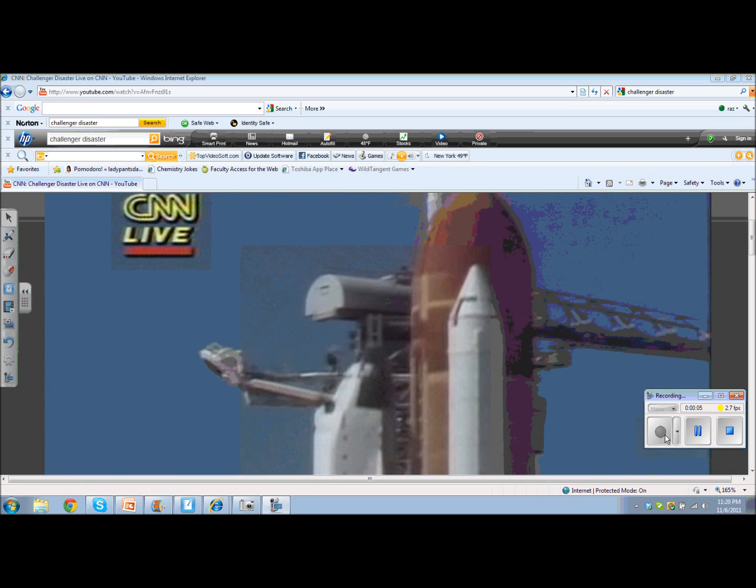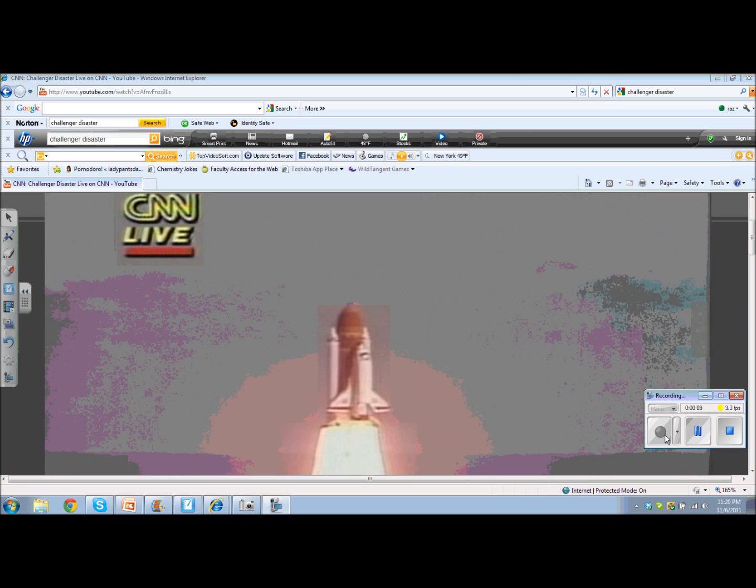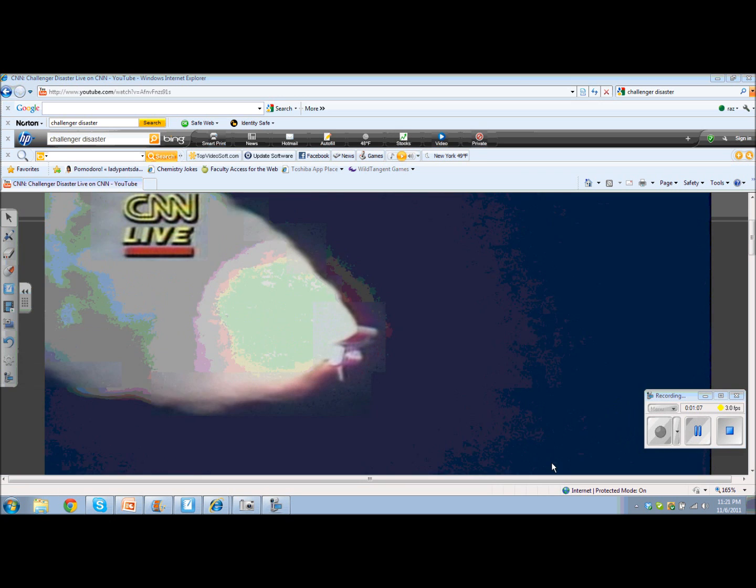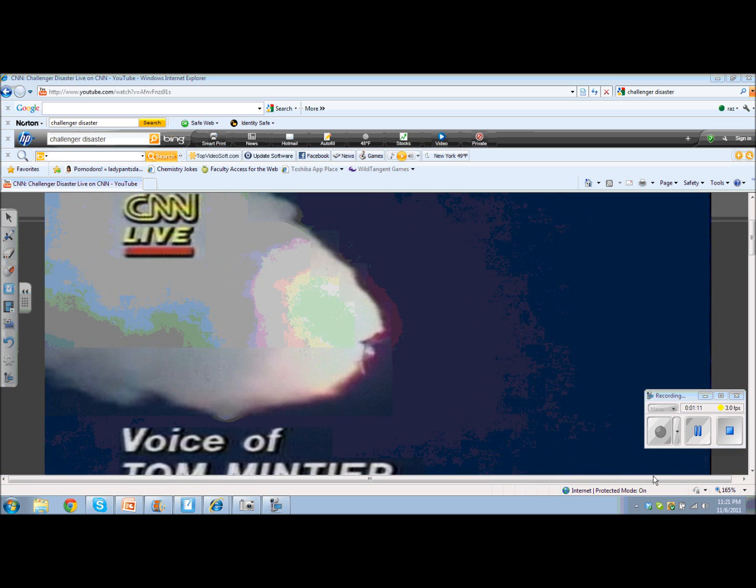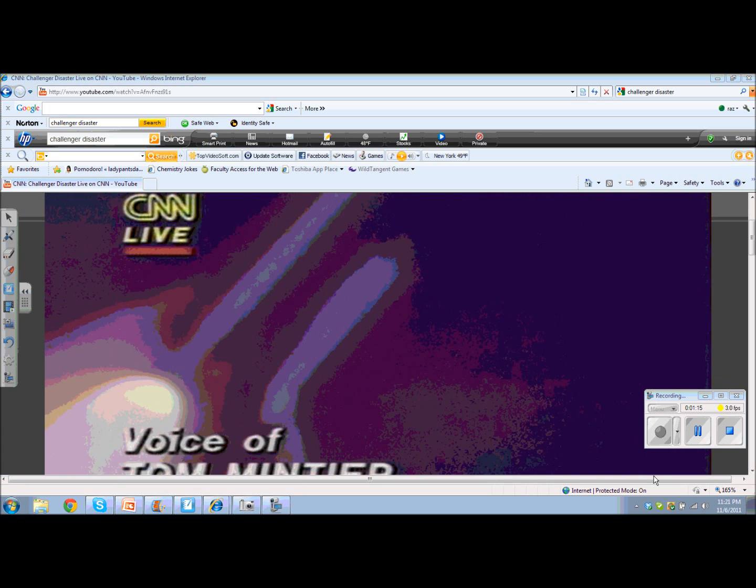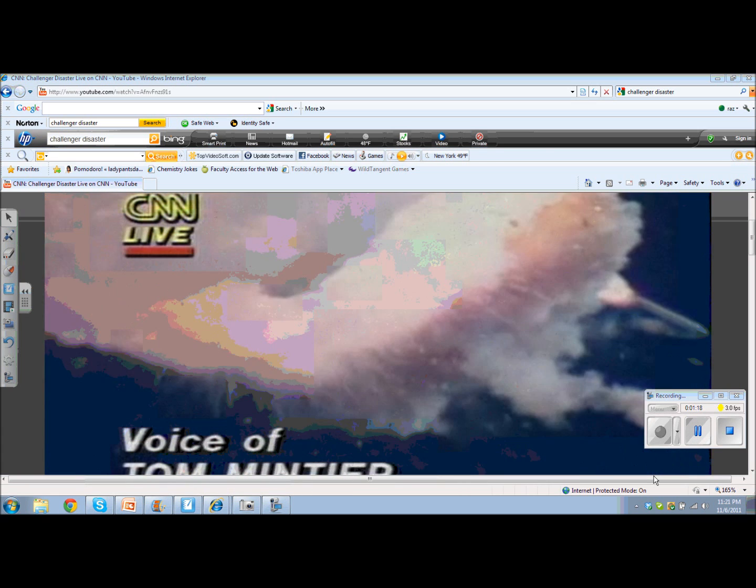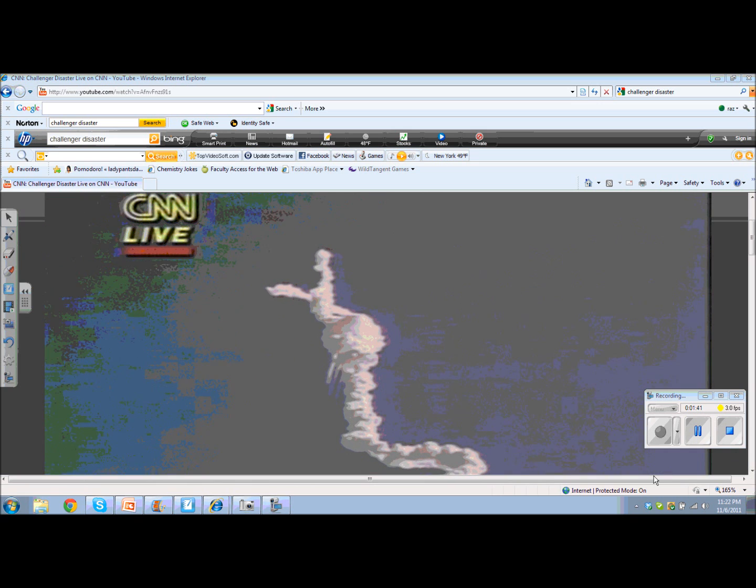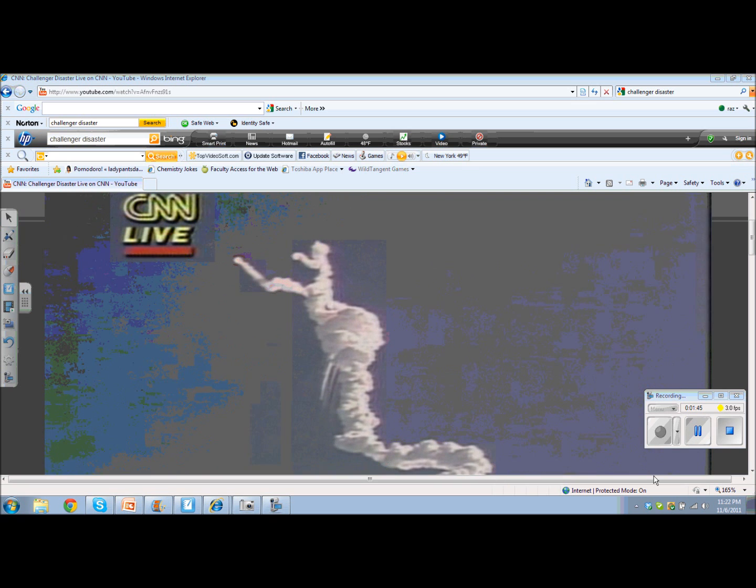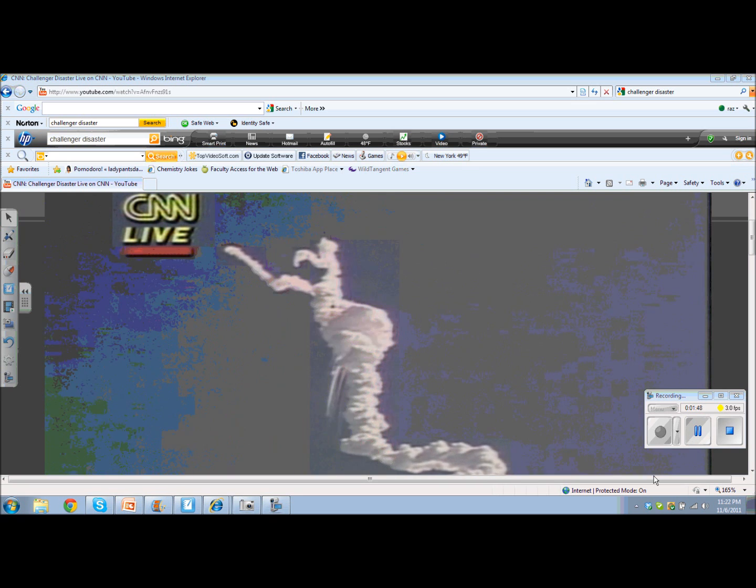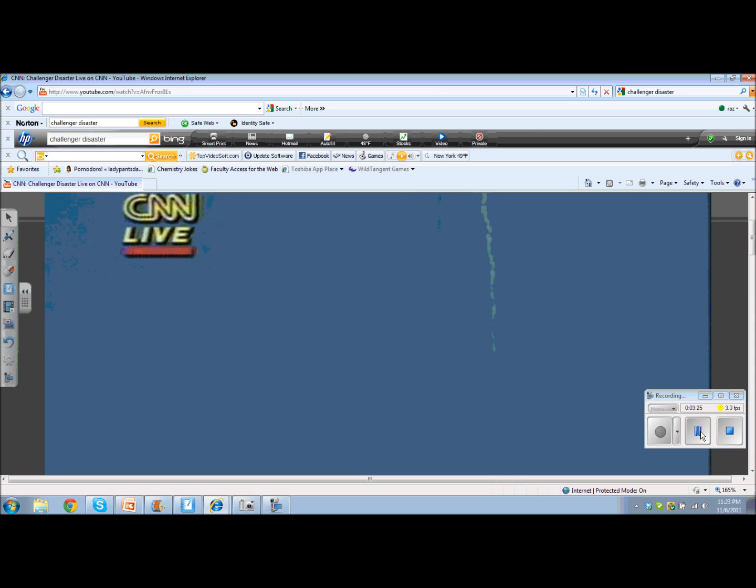Four, three, two, one, and liftoff, liftoff of the 25th space shuttle mission and it has cleared the tower. So the 25th space shuttle mission is now on the way after more delays than NASA cares to count. Looks like a couple of the solid rocket boosters blew away from the side of the shuttle in an explosion. Again, to repeat, we have a report relayed through the flight dynamics officer that the vehicle has exploded. We are now looking at all the contingency operations and awaiting work from any recovery forces in the downrange field. A sad moment in history.